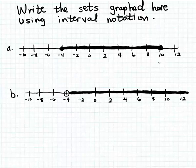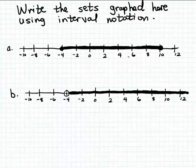In this example, we're given a couple of sets of real numbers that are graphed on real number lines, and we simply want to write these sets using interval notation. This example really demonstrates the usefulness of interval notation because it can be clumsy and time-consuming to try to graph a set of real numbers on a real number line, although that is a useful way of indicating a set of real numbers.